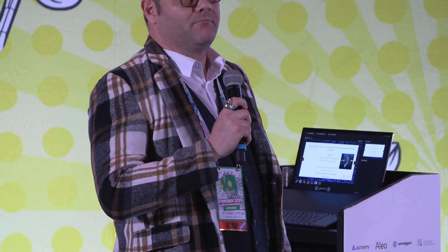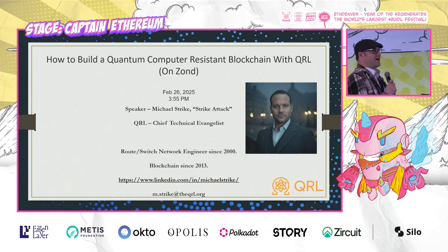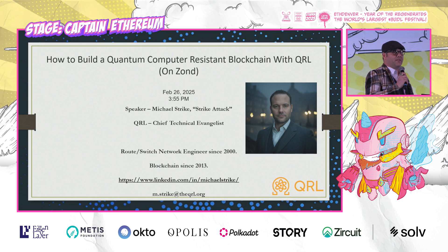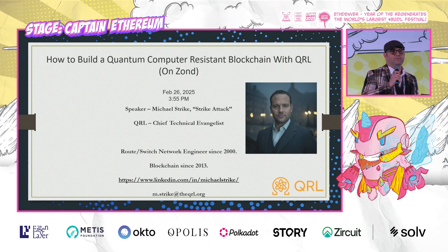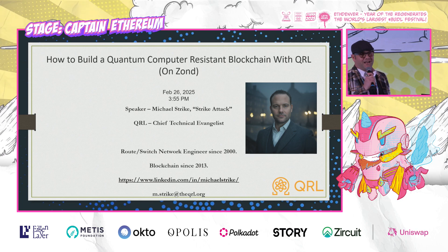Just a moment about me. My classical background is route, switch, firewall, process improvement. I've been a network engineer for a long time. My non-classical career is here at the Quantum Resistant Ledger. I've been in blockchain since about 2013. Most of the slides have a lot of words on them, so if you hear anything interesting and I've already moved on, you'll be able to circle back to it.